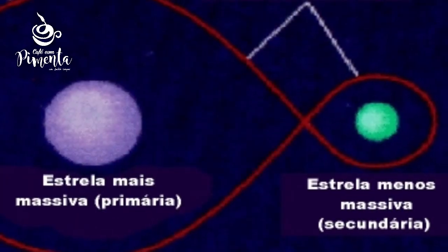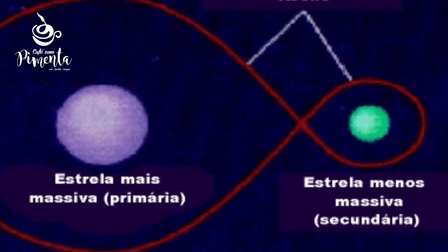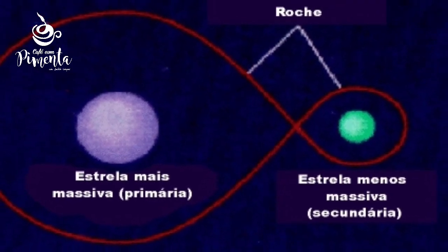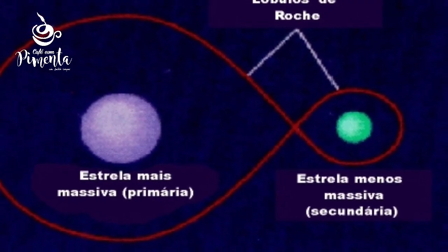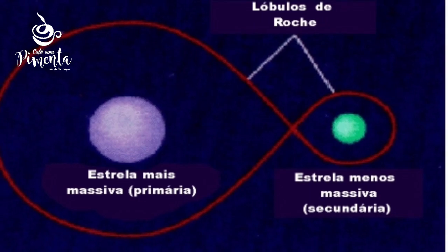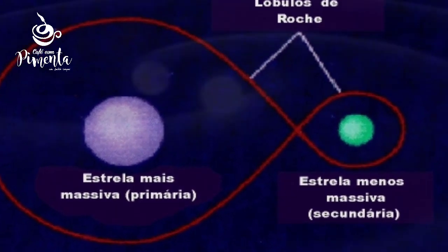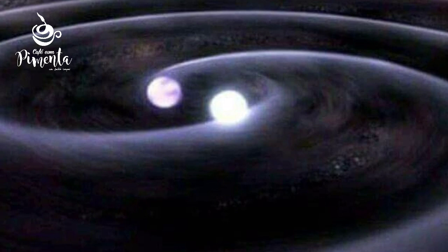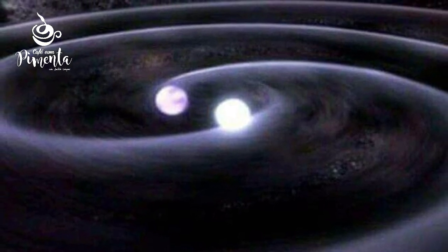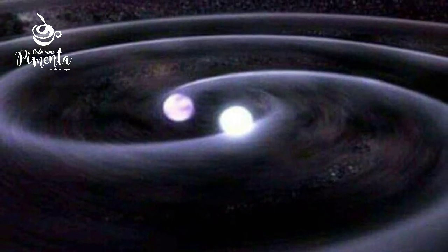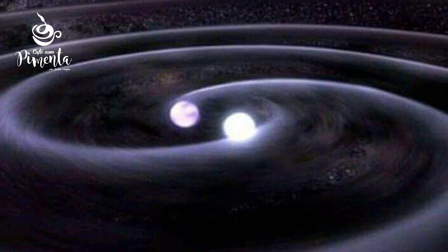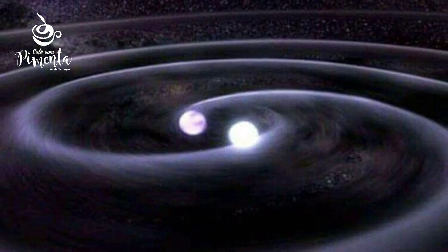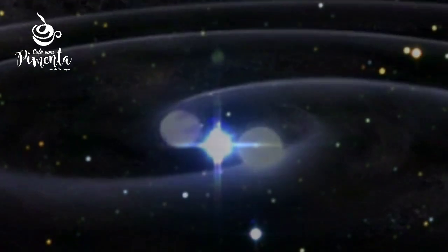O termo mais geral estrela dupla é utilizado em pares de estrelas que aparentam estar próximas uma das outras no céu terrestre. Estrelas duplas podem ser estrelas binárias ou apenas estrelas que aparentam estar próximas uma das outras no céu, mas que na realidade possuem distâncias do Sol muito diferentes. Essas últimas são chamadas duplas óticas ou pares ópticos.